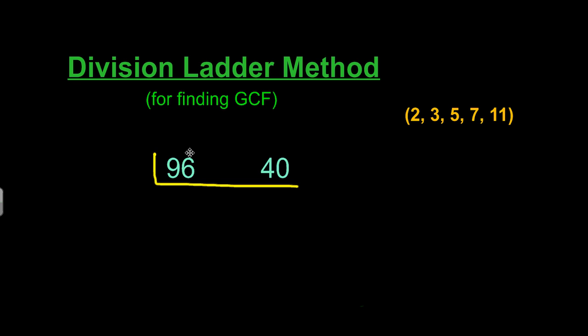We ask ourselves, are both of these numbers divisible by 2? We use our divisibility rules. Do they end in 0, 2, 4, 6, or 8? Are they even numbers? They are, so we get 2. When we take 96 divided by 2 and 40 divided by 2, we get 48 and 20.